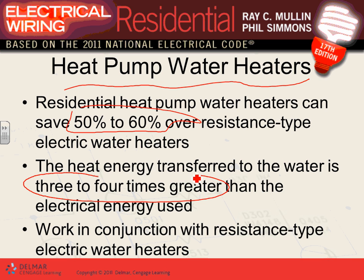Heat pump water heaters are 3-4 times more efficient than electrical resistance heaters. However, they need a backup resistive water heater for when room heat is insufficient — you don't want to chill the room too much. When backup kicks in, the resistive element takes over. Heat pump water heaters are sized like HVAC/AC equipment.